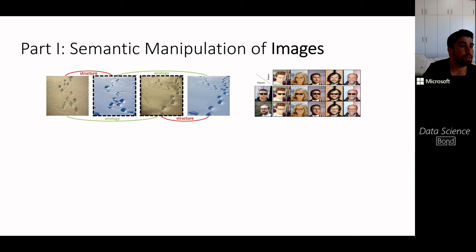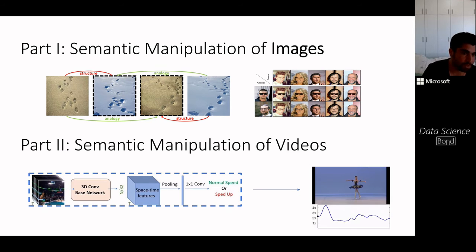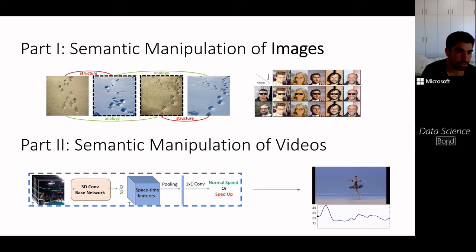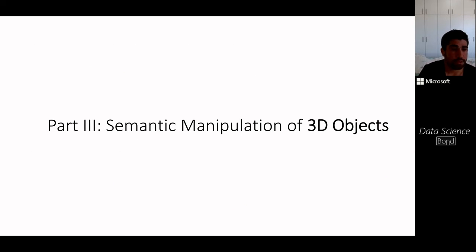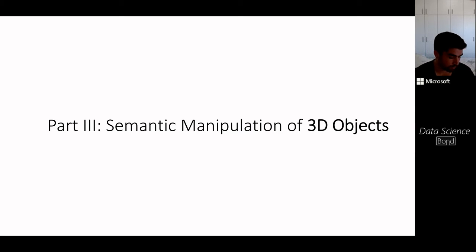To recap: part one covered semantic manipulation of images, particularly the structural analogy method using patch-based single-image approaches. Part two covered a different type of manipulation — taking a video and making it shorter in a semantically meaningful way using speediness as supervision. Now in the last part of the talk, I'll discuss semantic manipulation of 3D objects.